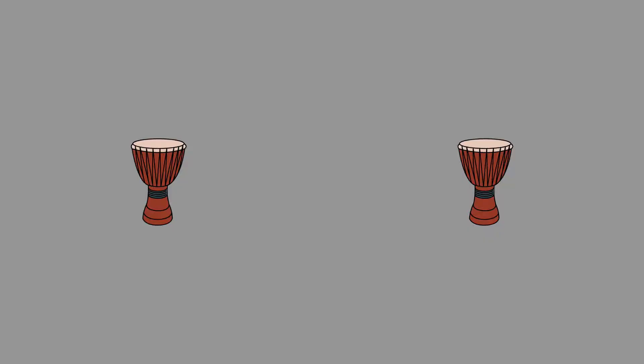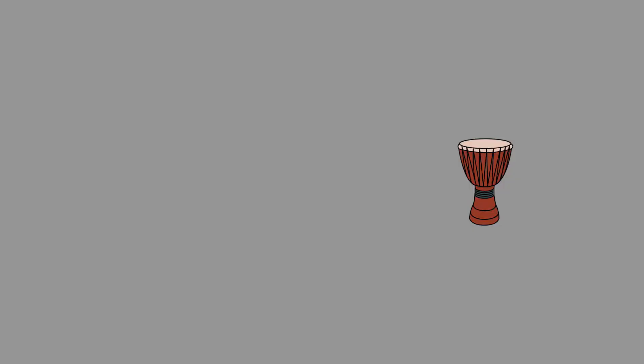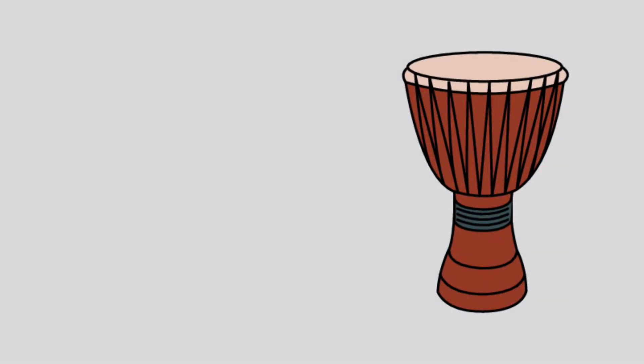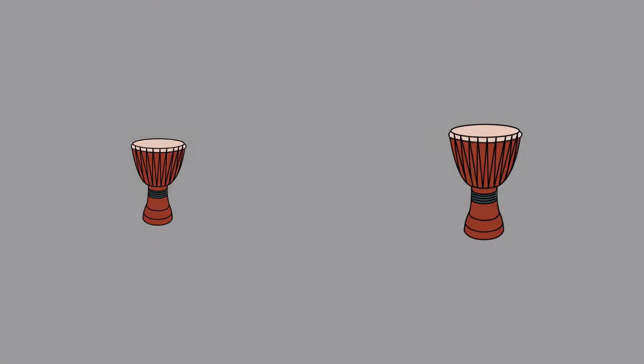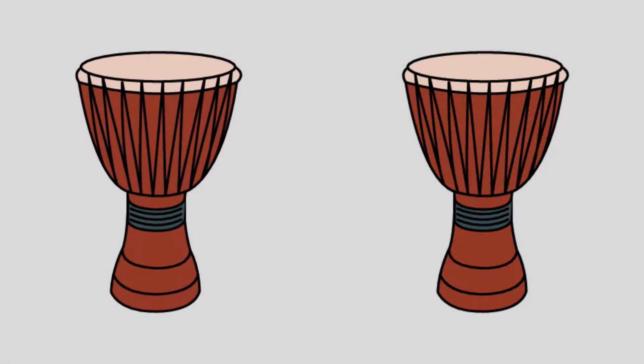The placement of the pictures alternate. Sometimes one is on the left, sometimes on the right, and when there are two objects, sometimes the one on the left zooms towards you first, sometimes the one on the right zooms towards you first. This was done to make sure that students are actually learning one or two, and not left or right.